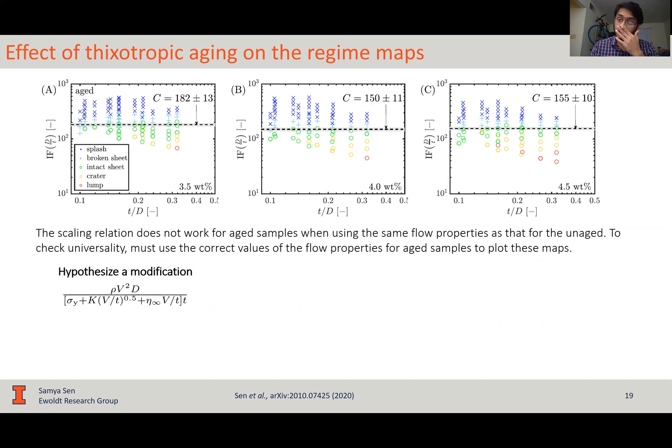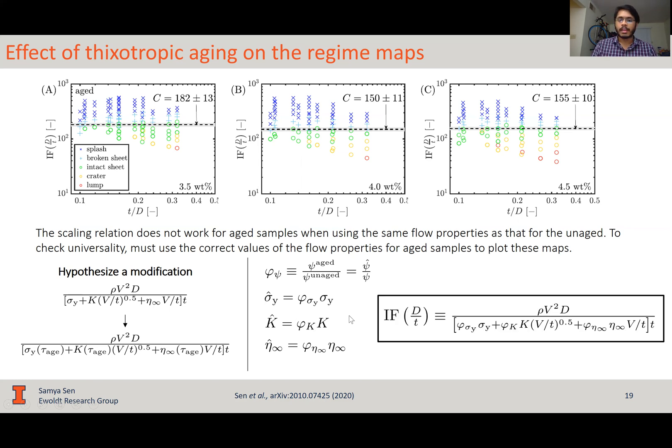So, we hypothesize a modification in order to make this group amenable to thixotropic aging or rejuvenation. We modify this dimensionless group, which has no provision for any thixotropy, to make the three flow parameters in the denominator functions of aging time. The yield stress, consistency index, and the Bingham plastic viscosity. Now, we define an aging ratio called phi sub psi, where psi is the flow parameter, and this is the ratio of the aged to the unaged flow parameter. And using these, you can define the aged yield stress, consistency index, and Bingham plastic viscosity. Using that, you have a much more general dimensionless group, which has provision within itself to incorporate the effects of aging via these three aged factors.